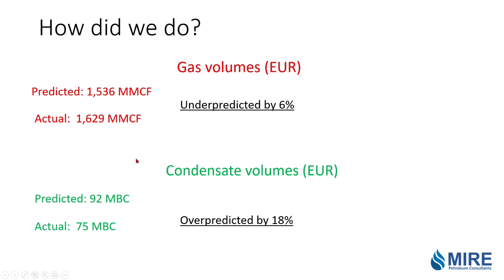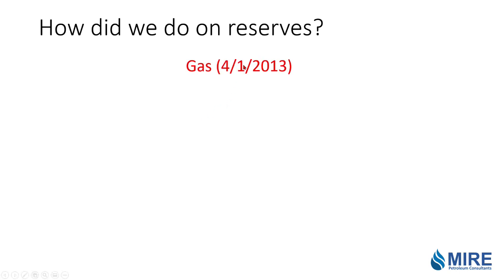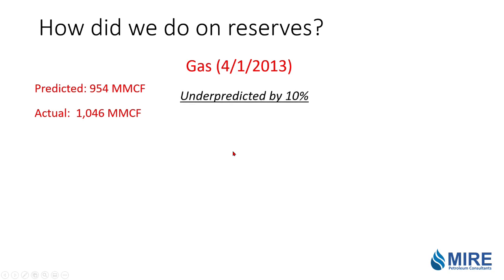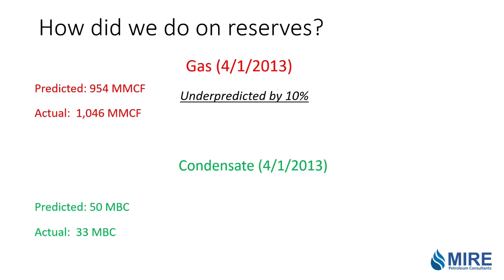Let's look at the reserve volumes — what was remaining as of the date of this study, as of 4-1-13. The predicted reserves were about 954 MMcf, but the actual was a little better — we underpredicted gas reserves by 10%. On the condensate, we predicted 50,000 barrels and only produced 33,000 — we overpredicted condensate reserves by 34% because we overestimated the average condensate yield. Overall, we did pretty good, but it's always good to go back and look and see how the well performed. I hope this was informative, and if you have any comments or questions or would have done it differently, please let us know — thanks for watching.